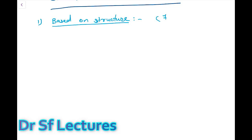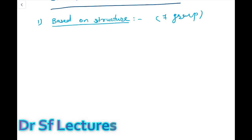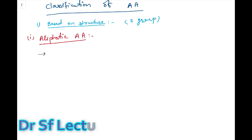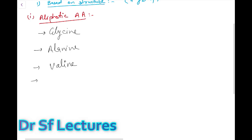Based on structure there are seven groups, and I challenge you — you will never forget these seven groups and their amino acid names. So the first group is aliphatic amino acids. The members are: glycine, alanine, valine, leucine, and isoleucine.